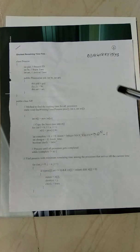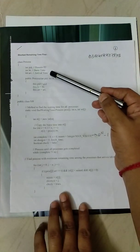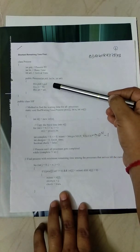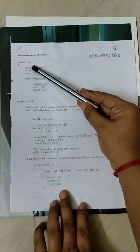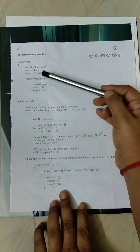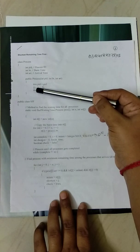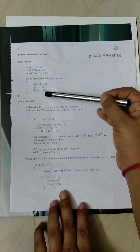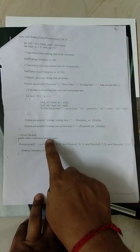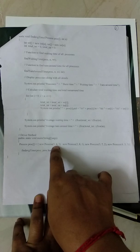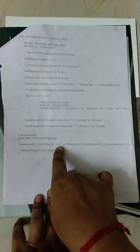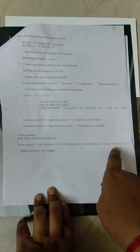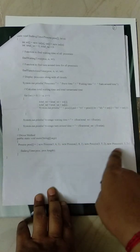This is the coding part for Shortest Remaining Time First implemented in Java. A class Process is created with fields for process ID, burst time, and arrival time. A constructor is used with the 'this' pointer to assign process ID, burst time, and arrival time to the current object. In the main function, four processes with their respective burst times and arrival times are defined.